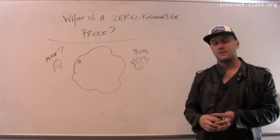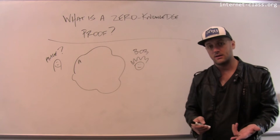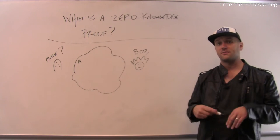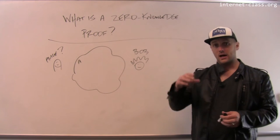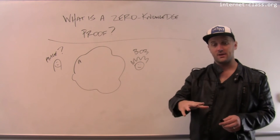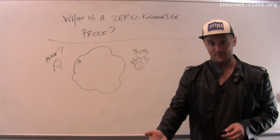Now early work on this assumed that the verifier was trustworthy. But eventually somebody raised this question: what if the verifier is not trustworthy? What if the prover needs to be able to prove something to the verifier without revealing that information?